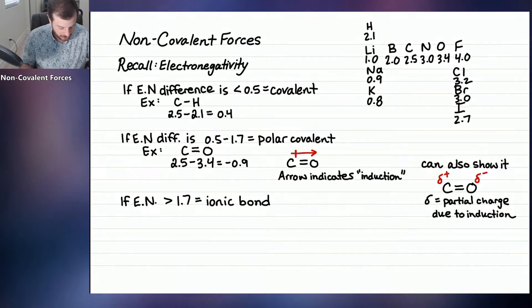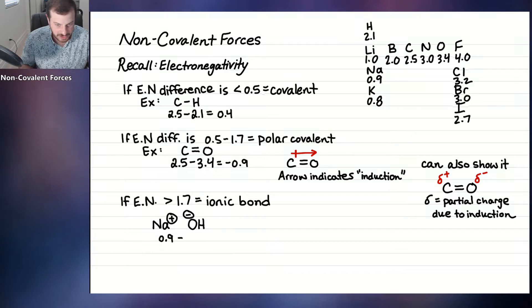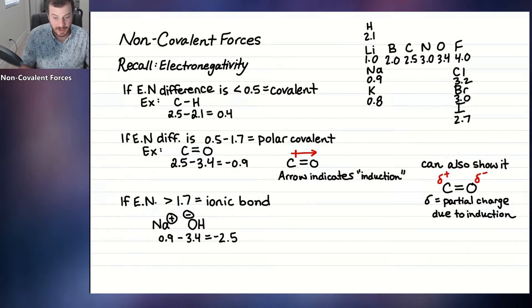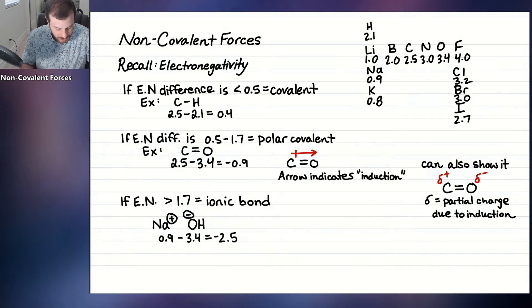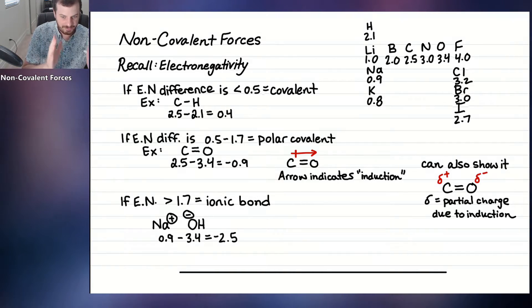For example, sodium hydroxide: sodium has an electronegativity of 0.9, and oxygen has 3.4. The difference is 2.5, which is greater than 1.7, so this is an ionic bond. These are somewhat arbitrary distinctions. In reality, the line between covalent, polar covalent, and ionic is more of a spectrum rather than hard ranges — every bond lies somewhere along that continuum.